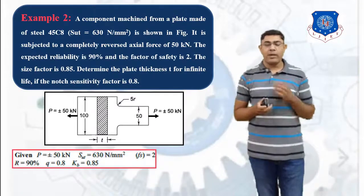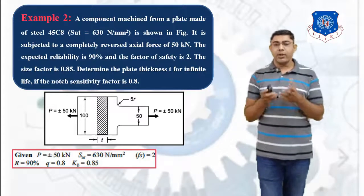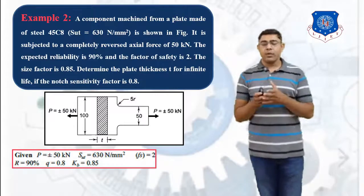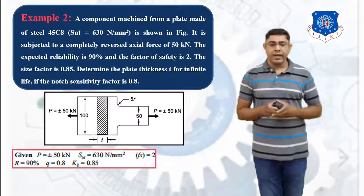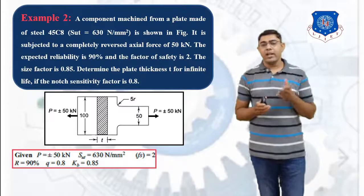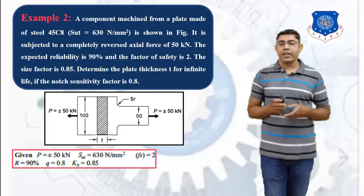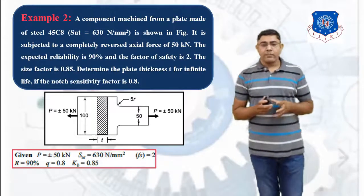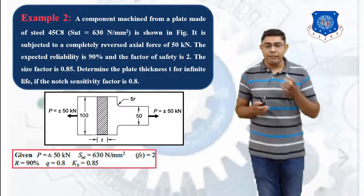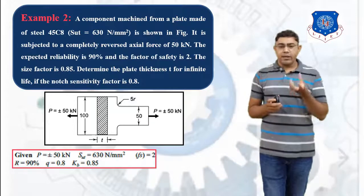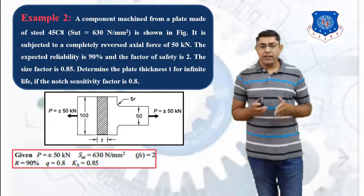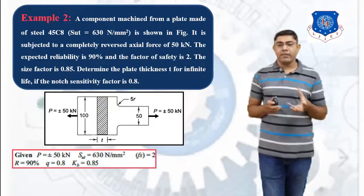The given data is: load P = ±50 kN, SUT = 630 N/mm², factor of safety = 2, reliability R = 90%, notch sensitivity Q = 0.8, and size factor KB = 0.85. The plate dimensions are: larger width W1 = 100 mm, smaller width = 50 mm, and fillet radius = 5 mm. Since this is an infinite life problem, we must use the endurance limit as the permissible stress to find the plate thickness.